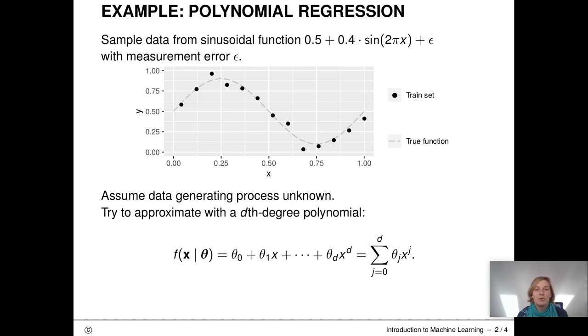Now let's pretend we do not know the data generating process and we try to fit a model to estimate it. We use a polynomial of degree D, so a linear model where the covariate X is included with different exponents.